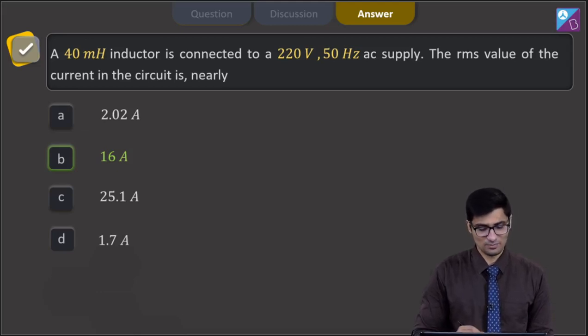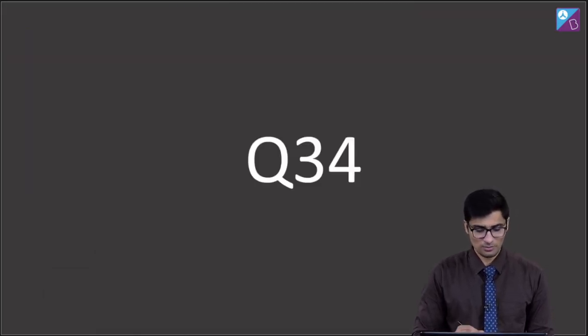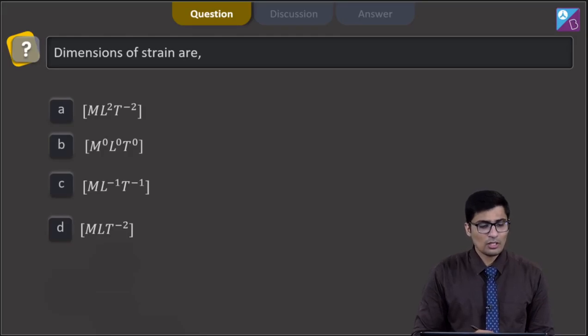Now, let us proceed to the next question. This is question 34. The question says that the dimensions of strain are and the 4 options are M L 2 T minus 2, M 0 L 0 T 0, M L minus 1 T minus 1 or M L T minus 2.